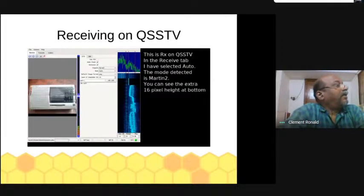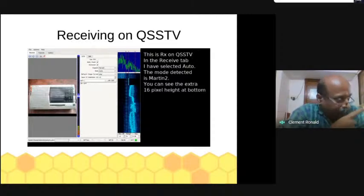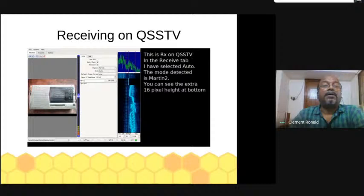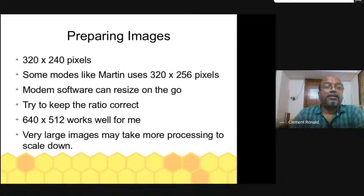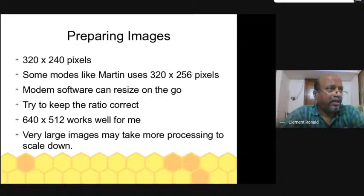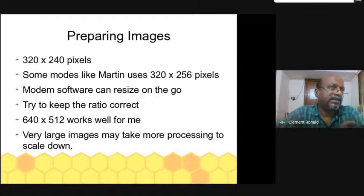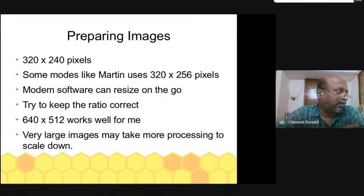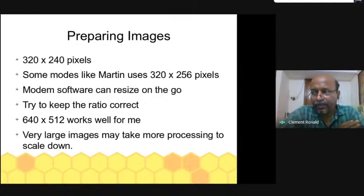You can see the image being formed line by line — that was the video of an SSTV reception. Now, how to prepare the images: the basic size is 320 by 240 pixels. You can open any image with MMSSTV and it will try to resize the images for you. However, if we ourselves create images in the correct size, that is easier for the software.